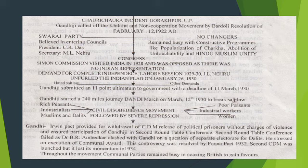A Second Civil Disobedience Movement was launched but it lost its momentum in 1934. Throughout the movement, communal parties remained busy in trying to gain favour from the British.